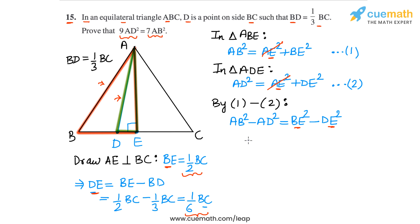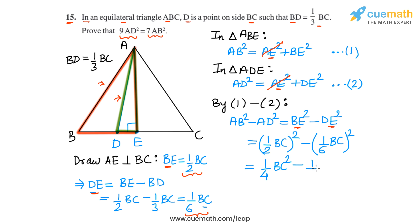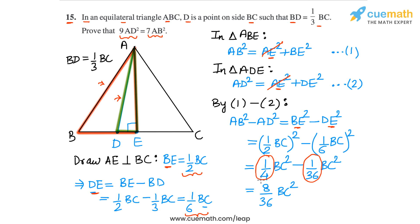Substituting: BE = (1/2)BC, so we get (1/2 · BC)² minus (1/6 · BC)², which gives one-fourth of BC² minus one thirty-sixth of BC². One-fourth is nine thirty-sixths, so nine thirty-sixths minus one thirty-sixth equals eight thirty-sixths of BC², which reduces to two-ninths of BC².